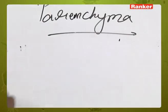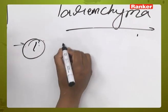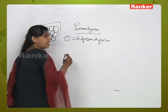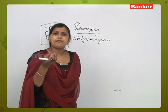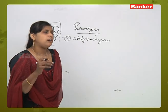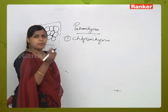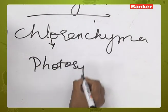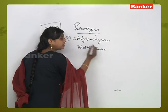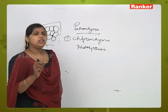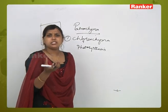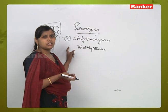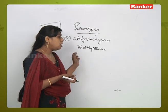The first type is called chlorenchyma. Chlorenchyma is a type of parenchyma tissue which undergoes the process of photosynthesis. We can find this parenchyma tissue in green leaves, which normally have chlorenchyma tissue. Parenchyma which undergoes photosynthesis is called chlorenchyma tissue.